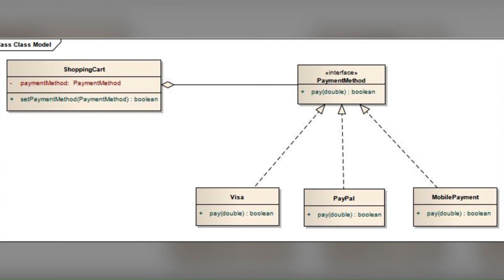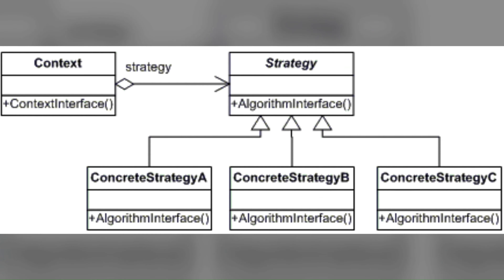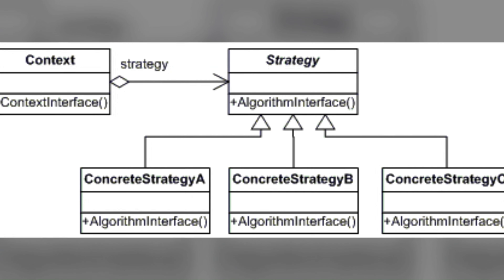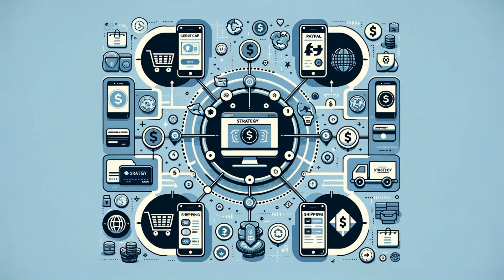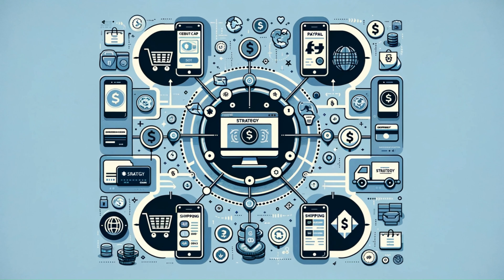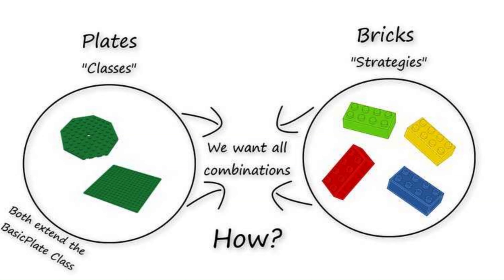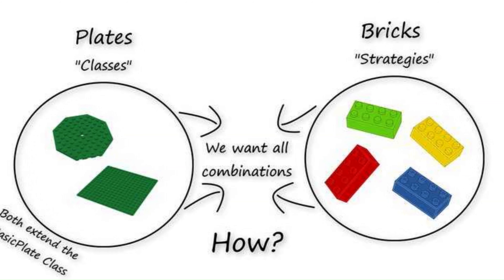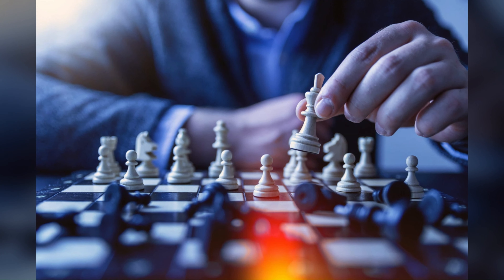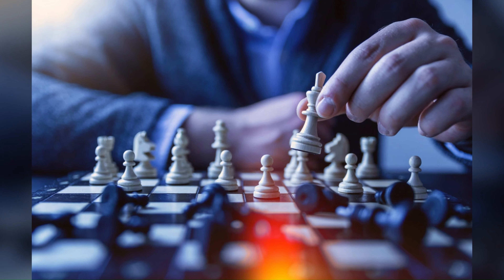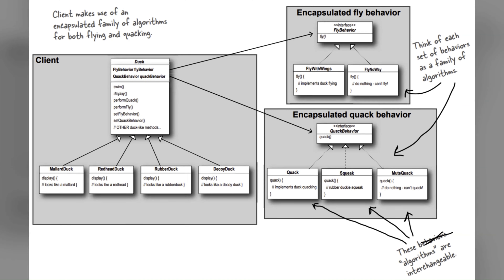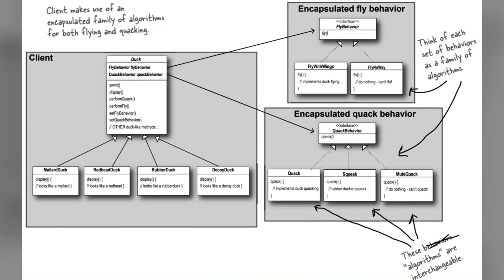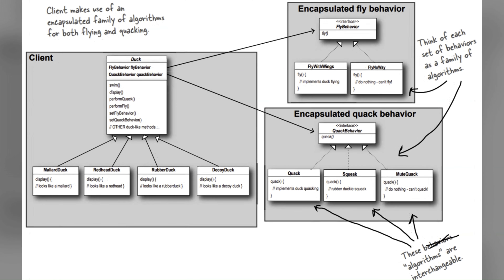Technically, think of it like an e-commerce application where different discount algorithms are applied to a shopping cart. The Strategy pattern allows switching between different discount algorithms — like seasonal discounts, loyalty discounts, or prime member discounts — dynamically in real time. Use it when there are several ways to do a task and you want to decide the best way at runtime, or when you want to avoid exposing complex algorithm-specific data structures.